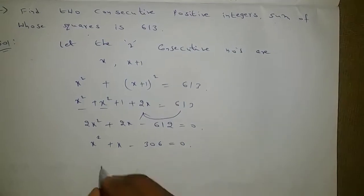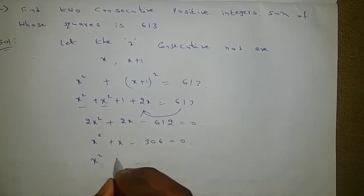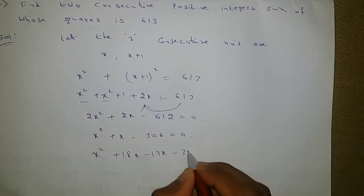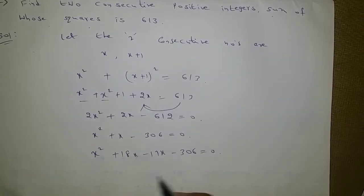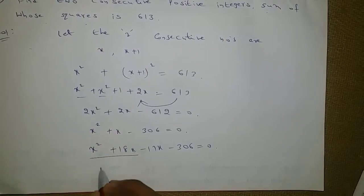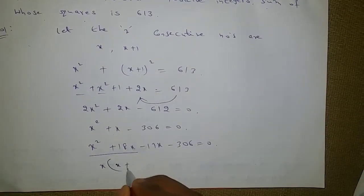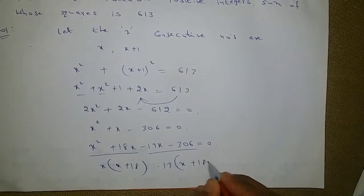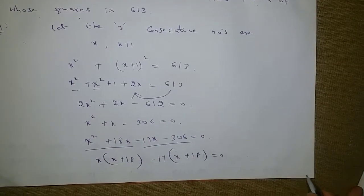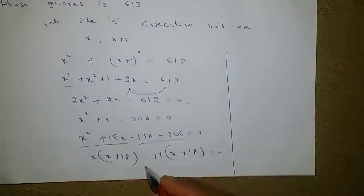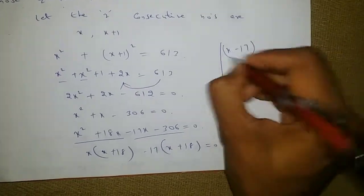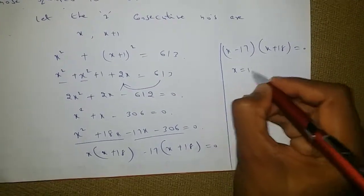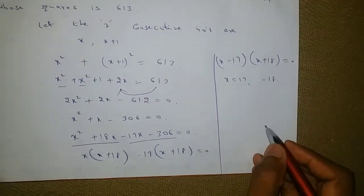Now splitting the middle term: x squared plus 18x minus 17x minus 306 equals 0. Taking x common from the first two terms gives x plus 18, and taking minus 17 common from the next two gives x plus 18. So x minus 17 into x plus 18 equals 0, giving x equals plus 17 or minus 18.